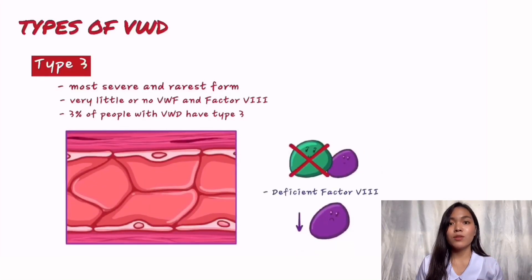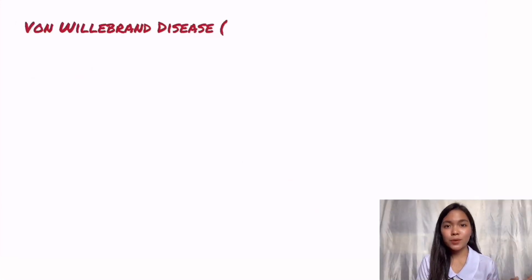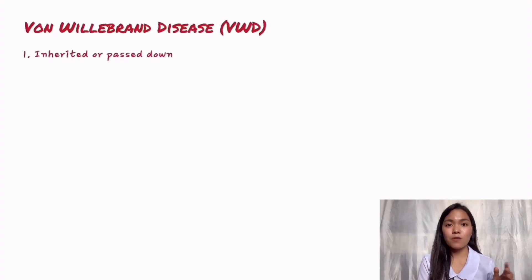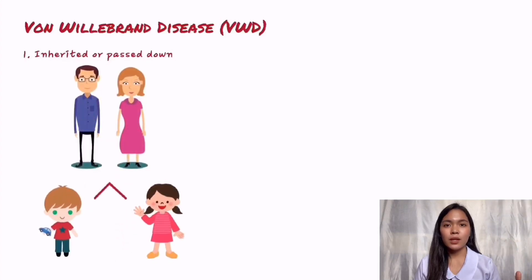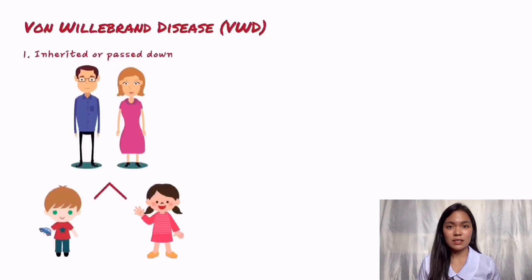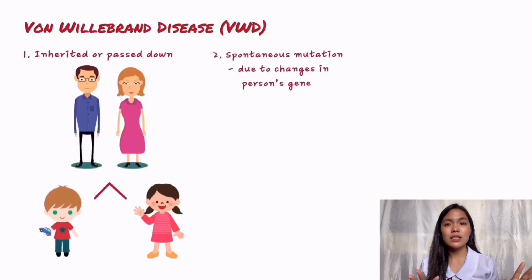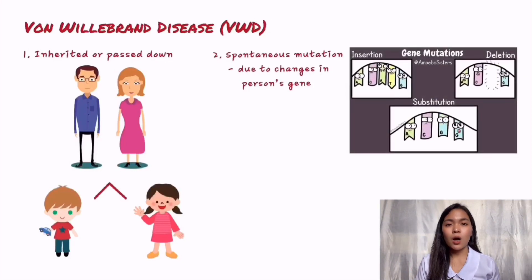Only 3% of people with von Willebrand disease have type 3. Most people who have von Willebrand disease are born with it — it almost always is inherited, or passed down from a parent to a child. While rare, it is possible for a person to get von Willebrand disease without a family history of the disease, and this can happen if a spontaneous mutation occurs or there has been a change in the person's gene. Once the child has it, he or she can later pass it along to his or her children.